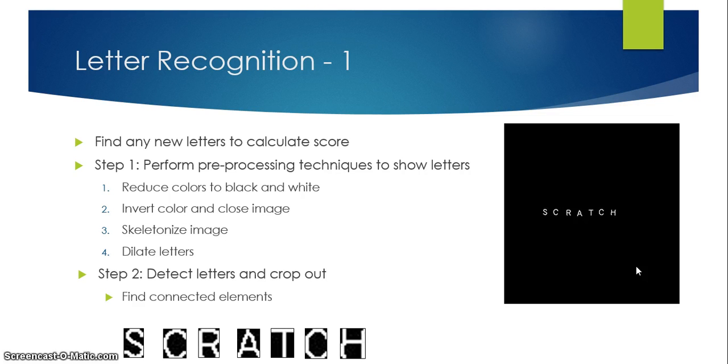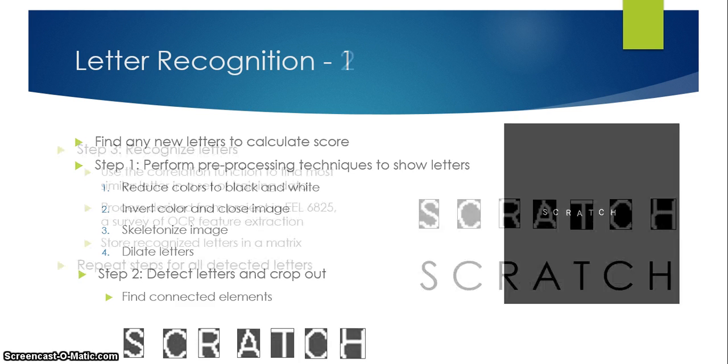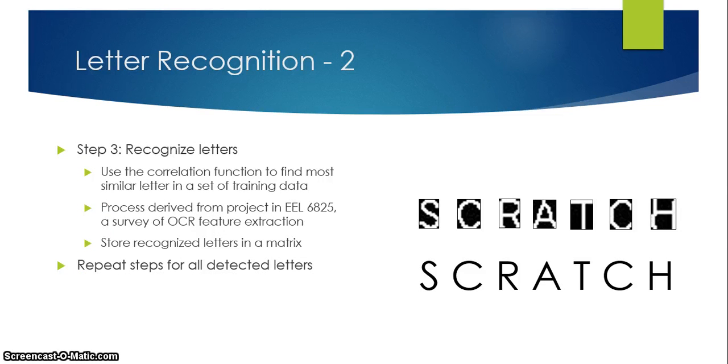Next I detect any connected components and this would be all the different letters, so you can see these are the different connected components that were found by the program: s-c-r-a-t-c-n-h. These are cropped out in preparation for the next step of letter recognition which is to actually recognize letters. This is based off an OCR method that I did in pattern recognition class which was a survey of OCR feature extraction methods. The one that I used was the best performing method of that project which is simple correlation. In this case the pictures of your training data are compared to pictures of your test data. Each of these seven letters were compared against a set of training data which were also images of letters, and the one that had the most correlation to these letters was chosen as the ASCII text characterization of the letter. Then you repeat the process for all seven letters so you get s-c-r-a-t-c-h in text format.